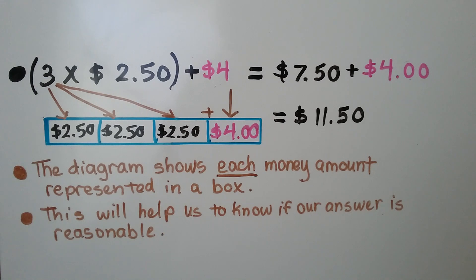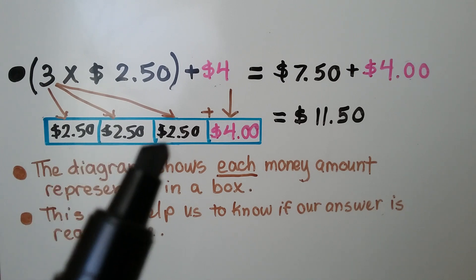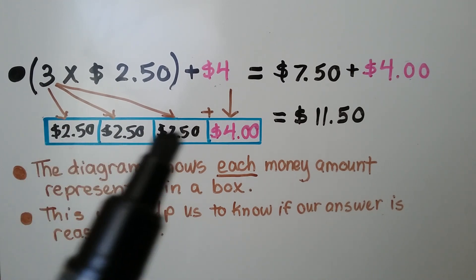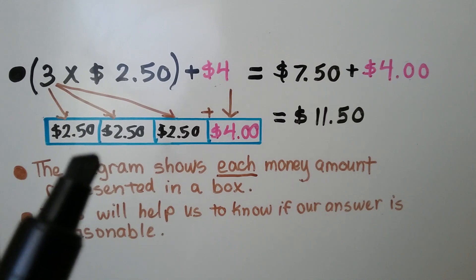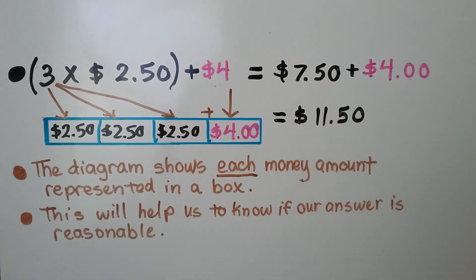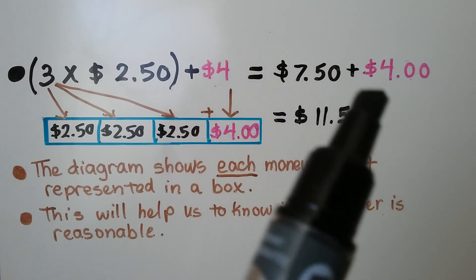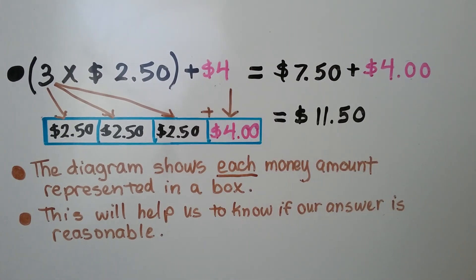For an equation such as 3 times $2.50 plus $4, we would represent it with a bar model, putting each amount into its own box. We have 3 times $2.50, so there are 3 boxes that contain $2.50, and a fourth box for the $4 that's being added. The diagram shows each money amount represented in a box, which will help us know if our answer is reasonable. We do 3 times $2.50, which equals $7.50, then add the $4, giving us $11.50.